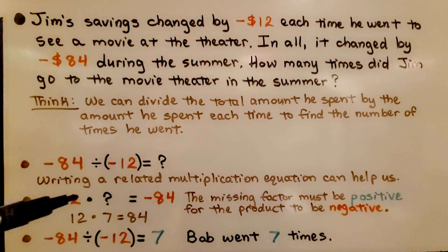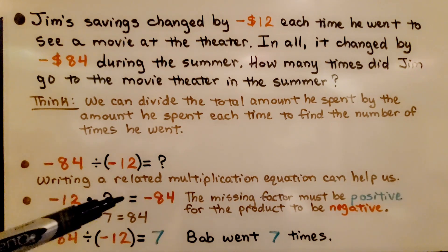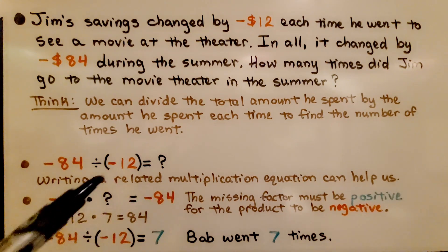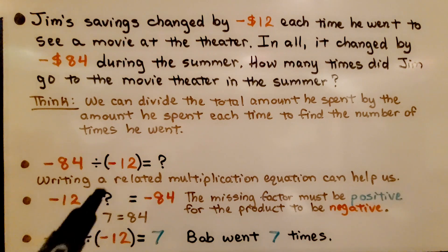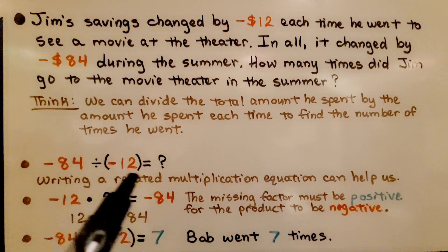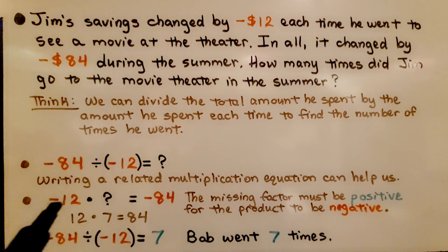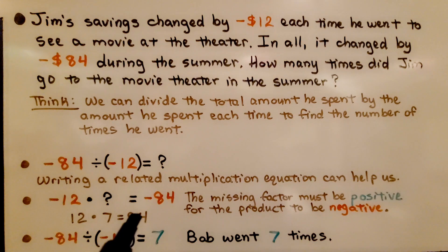We have negative 12 times some number is going to equal negative 84. And this missing factor must be positive for the product to be negative. These need to be unlike factors. We think, well, 12 times 7 is equal to 84. And this 7 is going to be our quotient and it's got to be a positive 7. We have like signs in our division problem. We know that Bob went 7 times to the movies.